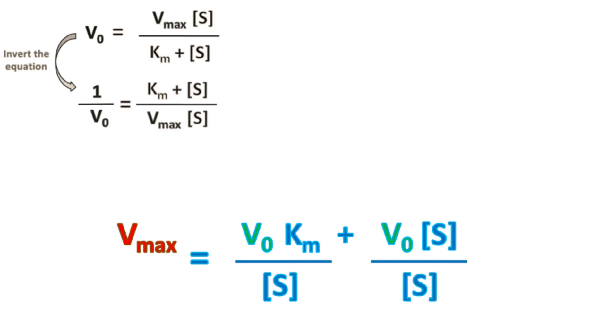Further rearranging the equation, we get Vmax equals V0 into Km upon S plus V0.